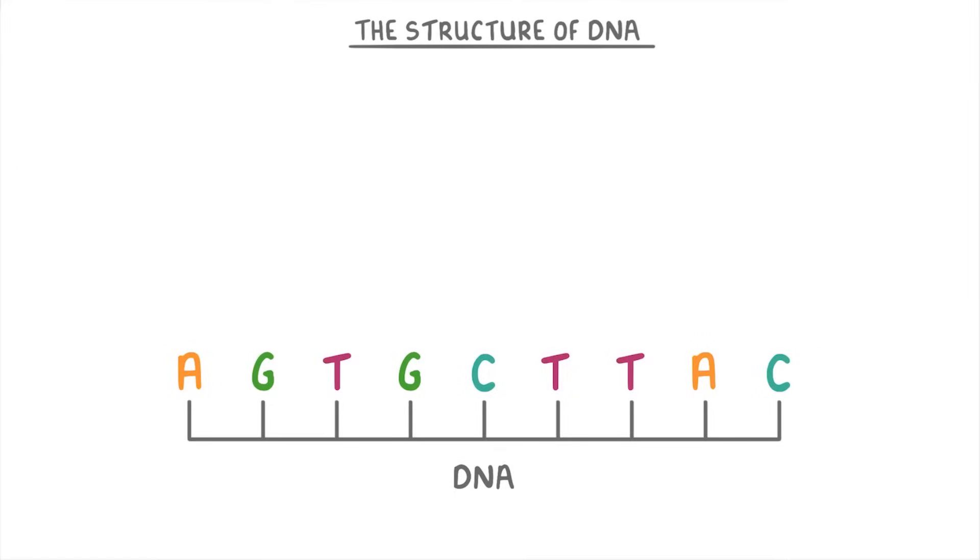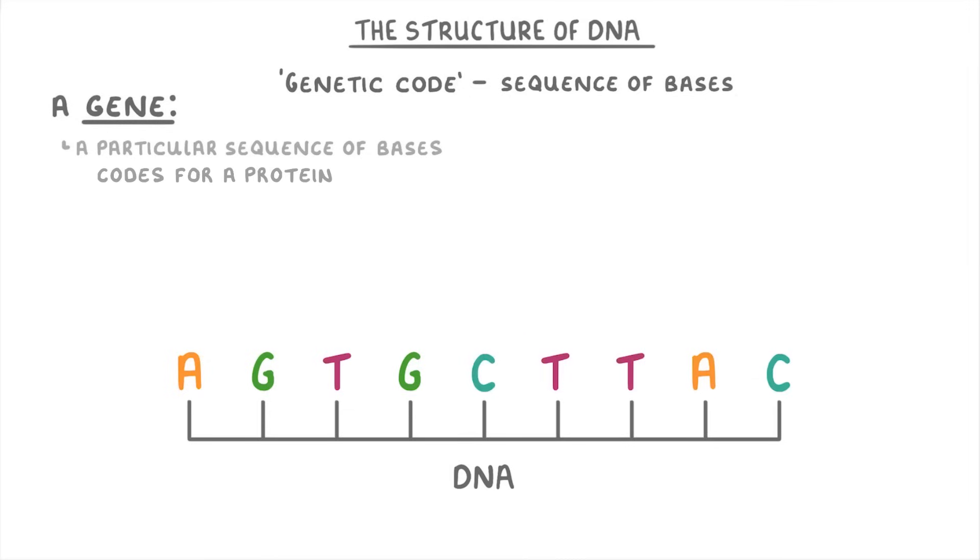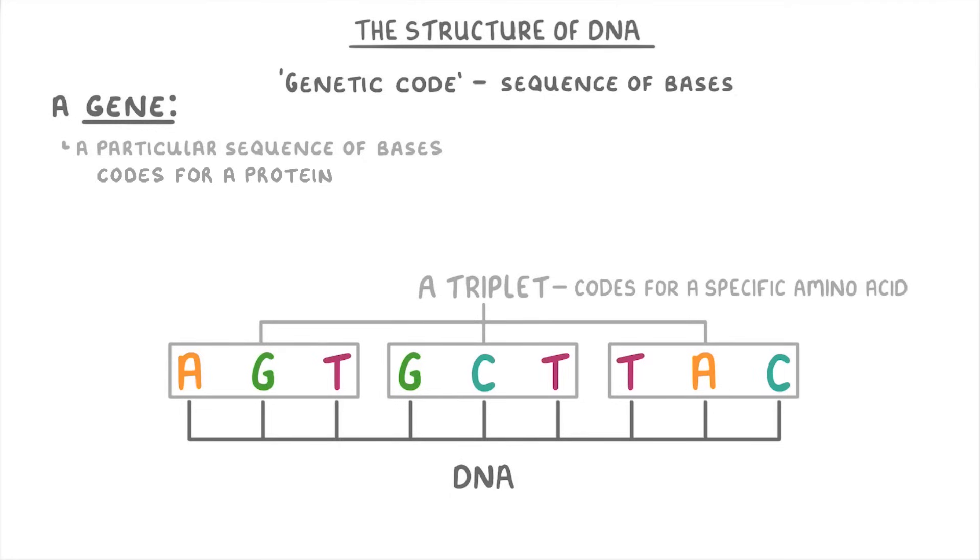As a last point, whenever you hear the term genetic code, it's the sequence of bases that they're talking about. And a gene is just a particular sequence of bases that codes for a particular protein. To do this, each group of three bases is called a triplet and codes for a specific amino acid.